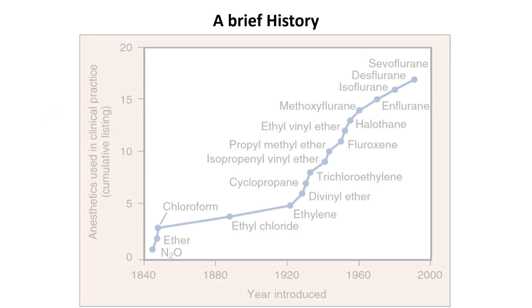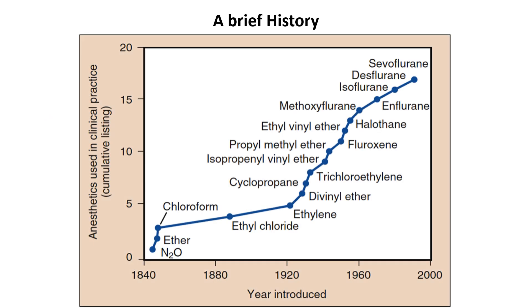A brief history first. The use of inhalation anesthetics began in the 1840s with the introduction of ether in 1846, chloroform in 1847, and nitrous oxide in 1844.